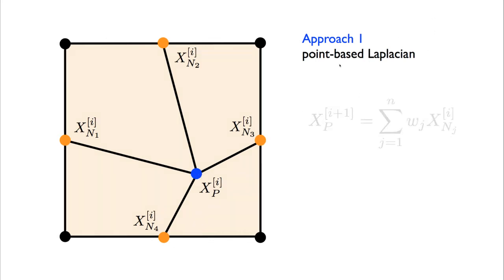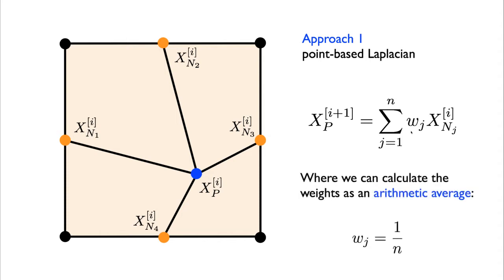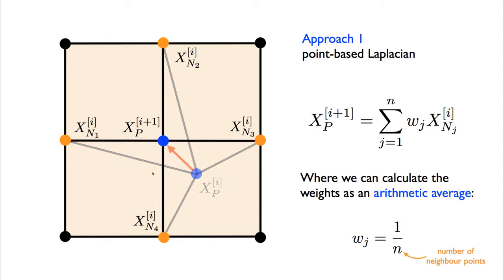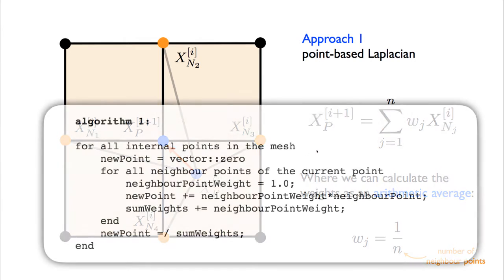Point-based Laplacian method says that our new coordinate for XP, so i plus 1, our new one, is just going to be some weighted average of its nearest neighbors. These weights could be calculated many different ways. The most simple is just to use an arithmetic average. In this case, it's basically saying that this new center point, the new position, just the average of the four nearest neighbors. So that would put it somewhere there. When we move that point, you can see we end up with a good quality mesh. Even though the method is quite simple, it actually works quite well.